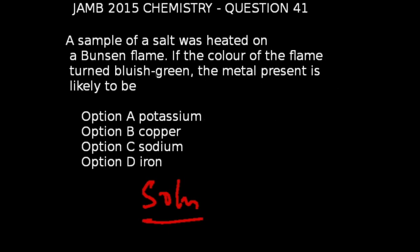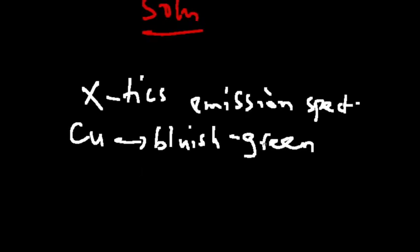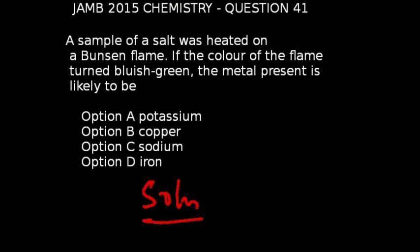Question number 41 of JAM 2015 chemistry: A sample of a salt was heated on a Bunsen flame. If the color of the flame turned blue-green, the metal present is likely to be — this is a question on qualitative analysis, used to detect metallic ions. Based on the emission spectrum characteristics, copper gives a blue-green flame color. The correct answer is option B, which is copper.